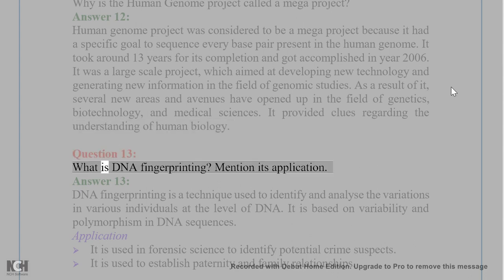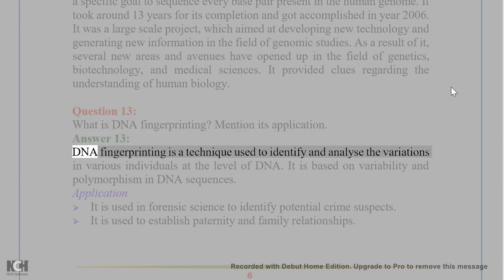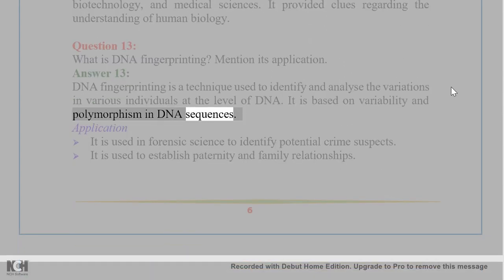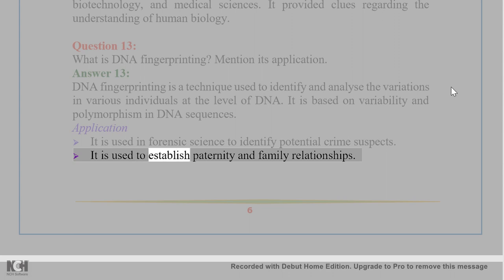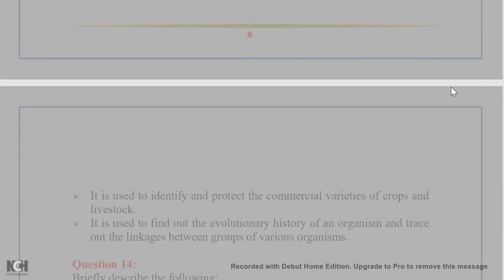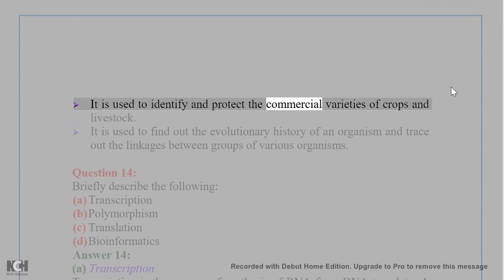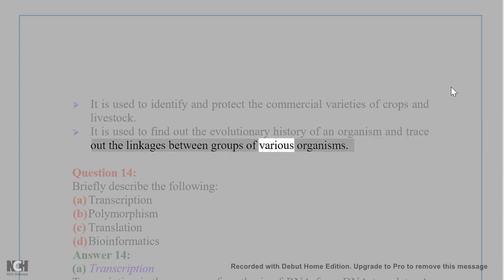Question 13. What is DNA fingerprinting? Mention its applications. Answer 13. DNA fingerprinting is a technique used to identify and analyze variations in various individuals at the level of DNA. It is based on variability and polymorphism in DNA sequences. Applications: It is used in forensic science to identify potential crime suspects; to establish paternity and family relationships; to identify and protect commercial varieties of crops and livestock; and to find out the evolutionary history of organisms and trace linkages between groups of various organisms.